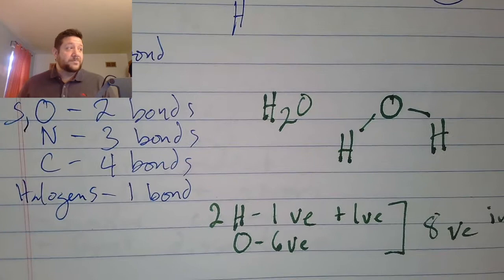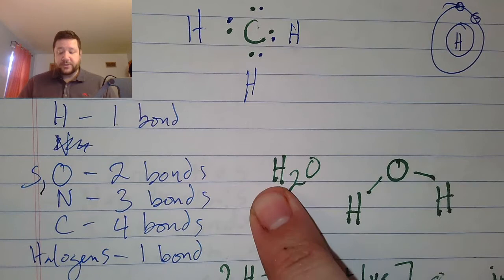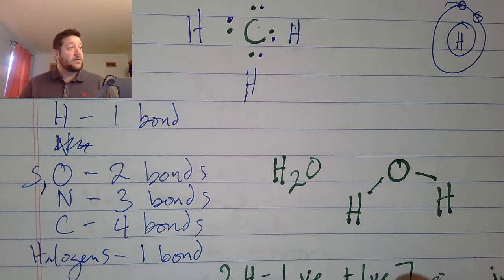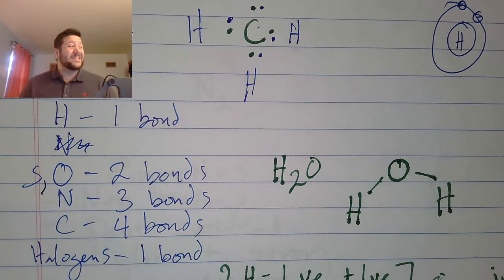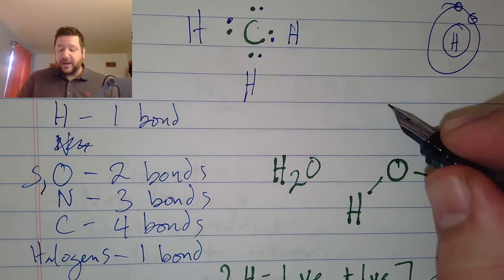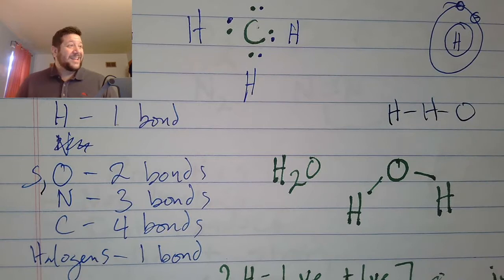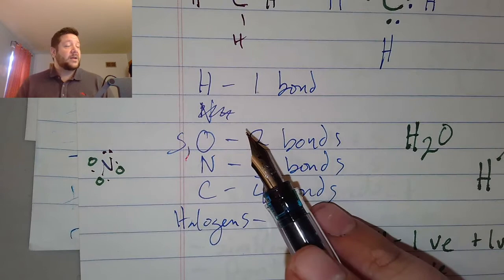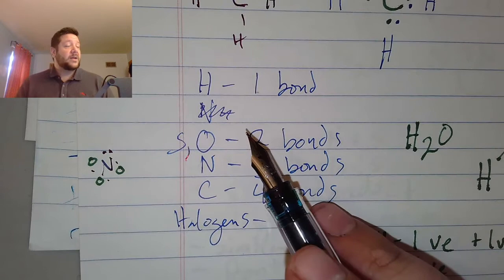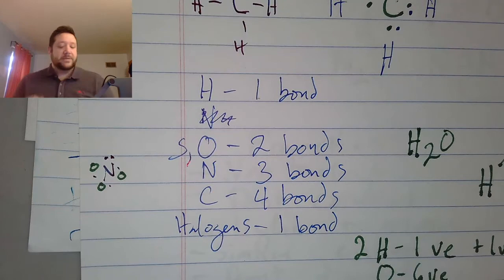This takes us to H2O. H2O has two hydrogens and one oxygen. Oxygen needs two bonds to be full; hydrogen needs one bond to be full. If we arrange them so each hydrogen connects to oxygen, all of a sudden we're happy and everything has the right number of valence electrons. This is why a different arrangement — like oxygen on the end or hydrogen in the middle — wouldn't work, because that hydrogen would have four valence electrons, which is not stable.